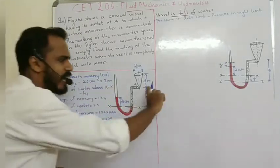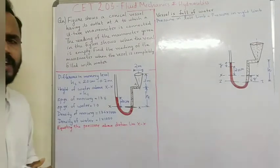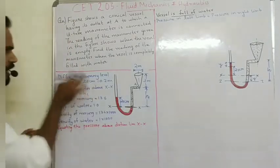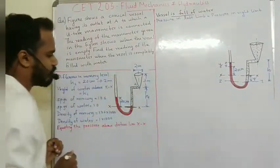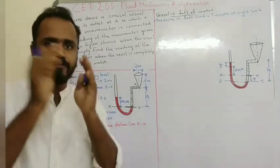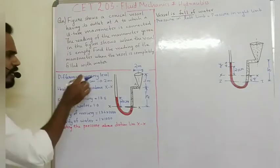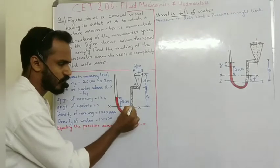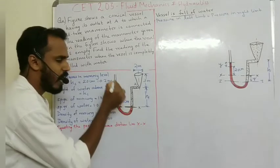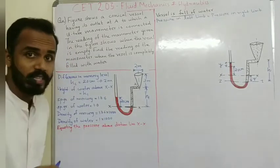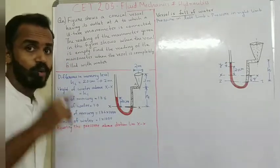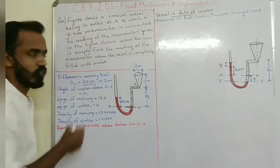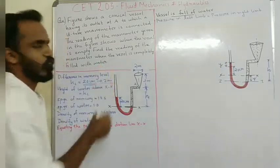We will discuss the figure and define the height H1. The first condition is when the vessel is empty. The difference in mercury level, H2, is given as 20 cm, which is equal to 0.2 meters.